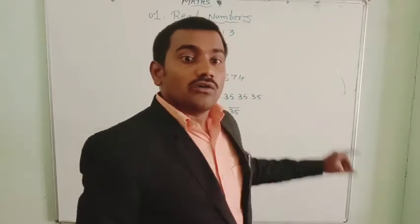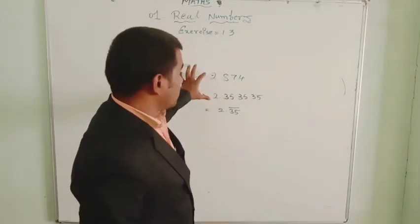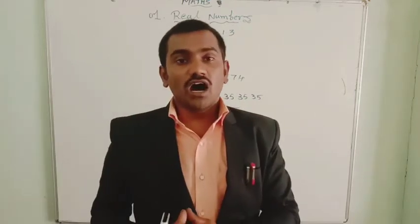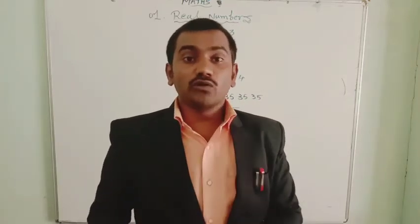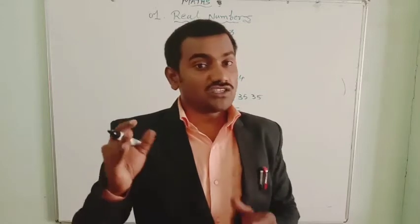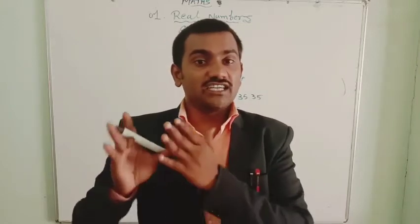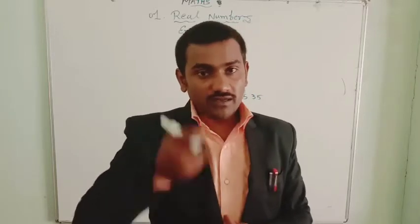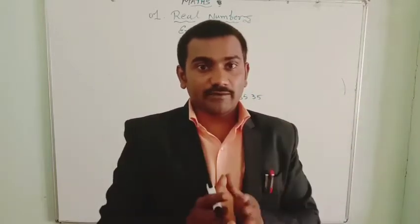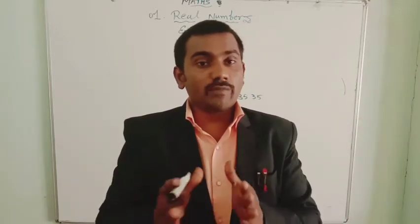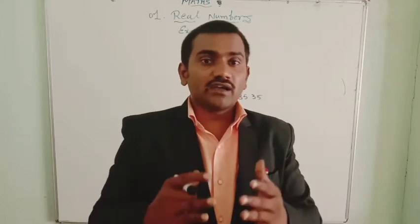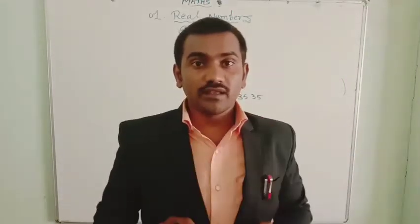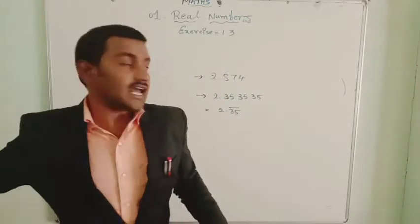We are going to represent these two types of rational numbers on the number line using successive magnification. A magnification glass allows us to enlarge and see things very closely — that is the concept we use here.